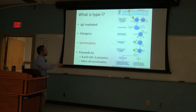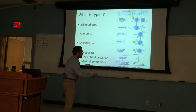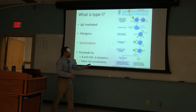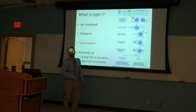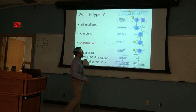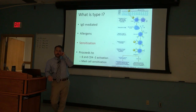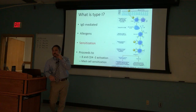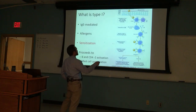Looking at this diagram, at the bottom we've got an immediate response and a delayed response. The immediate response happens right away; the delayed response happens two to eight hours after exposure. This is in our mucosal lining — let's pretend this is in your nasal epithelium. If you're allergic to something, your nose starts to run, you get stuffy, your eyes water and get itchy.